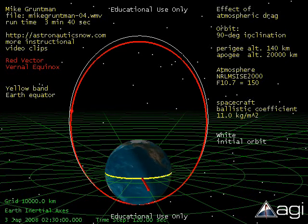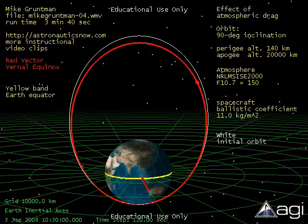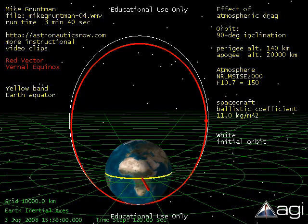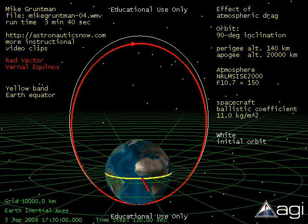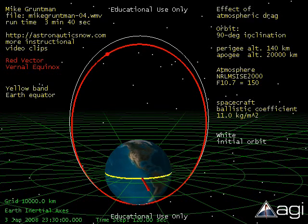The satellite experiences atmospheric drag while orbiting the Earth. The drag force is proportional to the atmospheric density and to the square of the spacecraft velocity. The spacecraft ballistic coefficient, the ratio of the spacecraft mass to the product of the drag coefficient and effective cross-sectional area, is 11 kg per square meter.